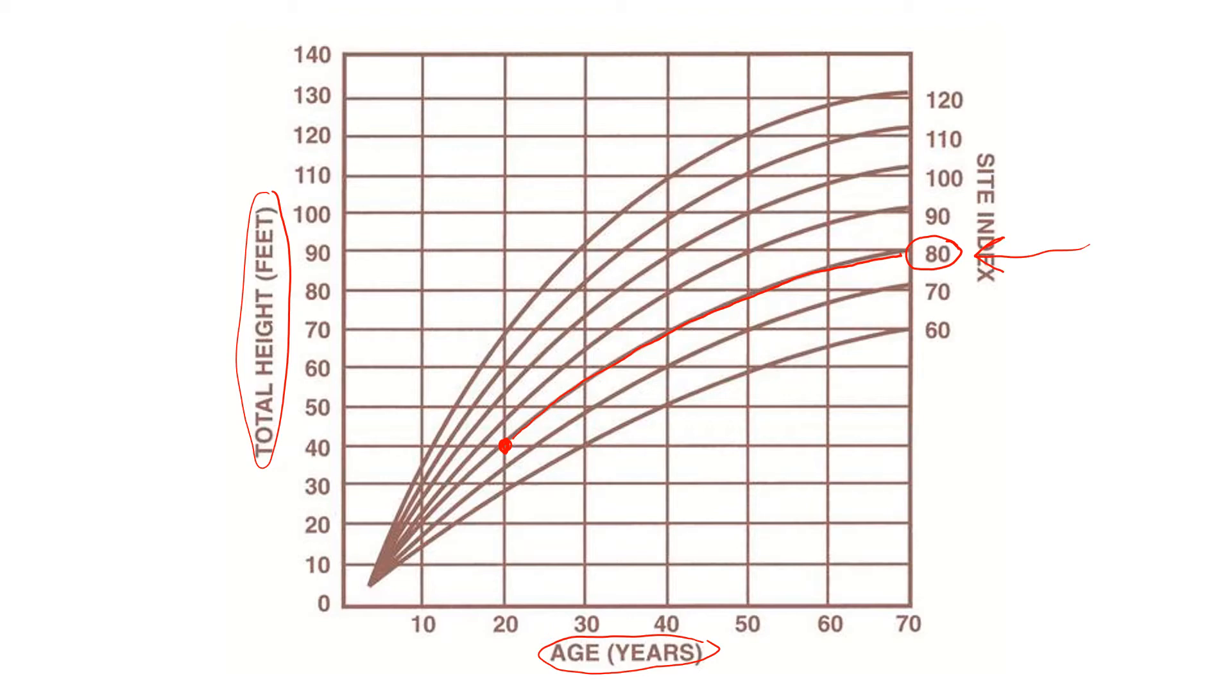you could then follow this curve up and say that the site index at that site is 80, meaning that when the tree is the base age, in this case this graph is based on the base age of 50, so when trees on this site are 50 years old, you could expect them to be 80 feet tall.